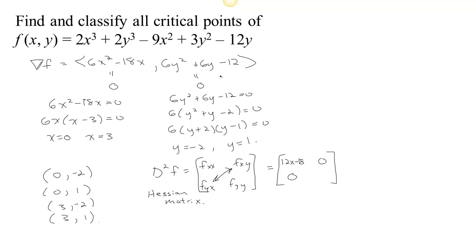Starting from f sub x, f sub xx is the derivative with respect to x, which gives 12x minus 18. f sub xy is 0, and f sub yx is 0 as well. Taking the partial of f sub y with respect to y gives 12y plus 6. The second derivative depends on the values of x and y, and our test involves calculating the determinant of this Hessian matrix at each of our four cases.